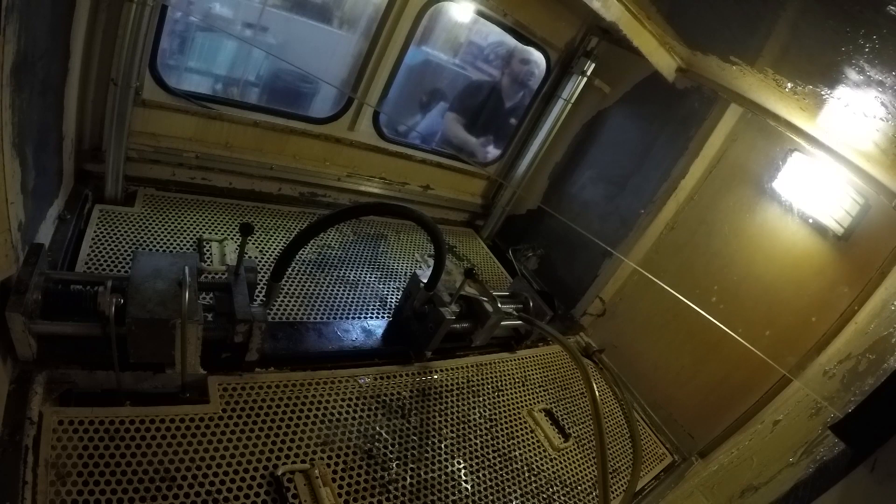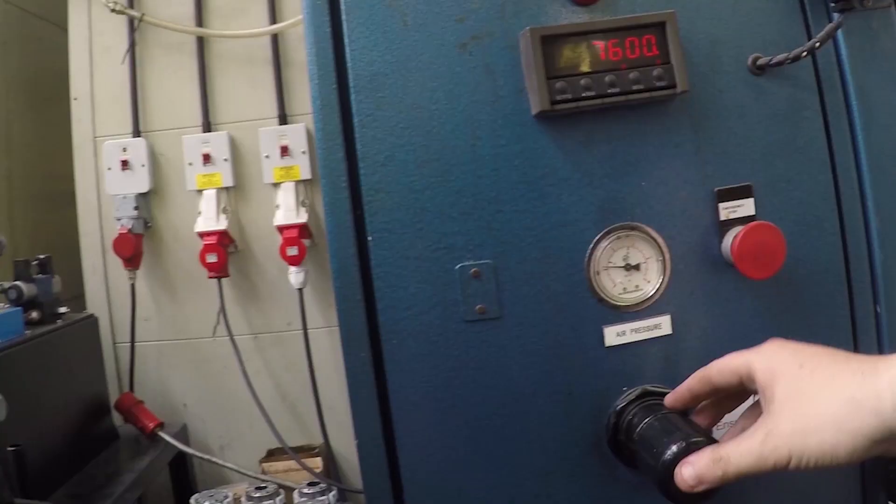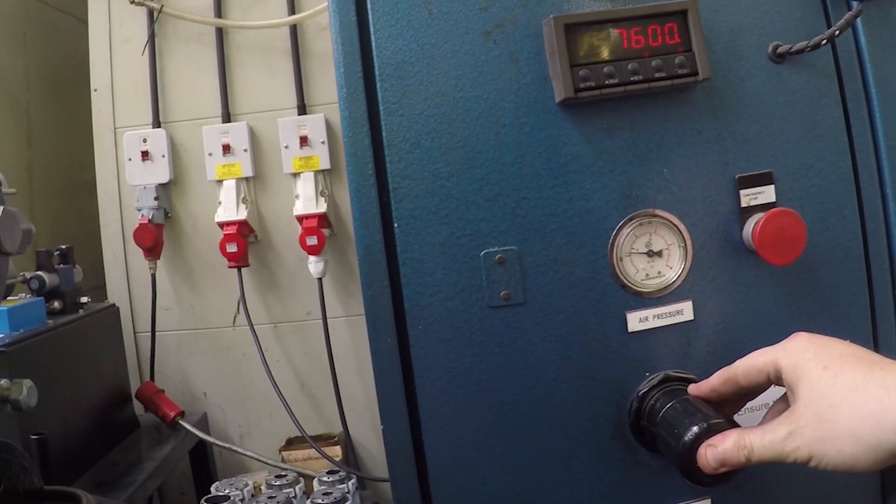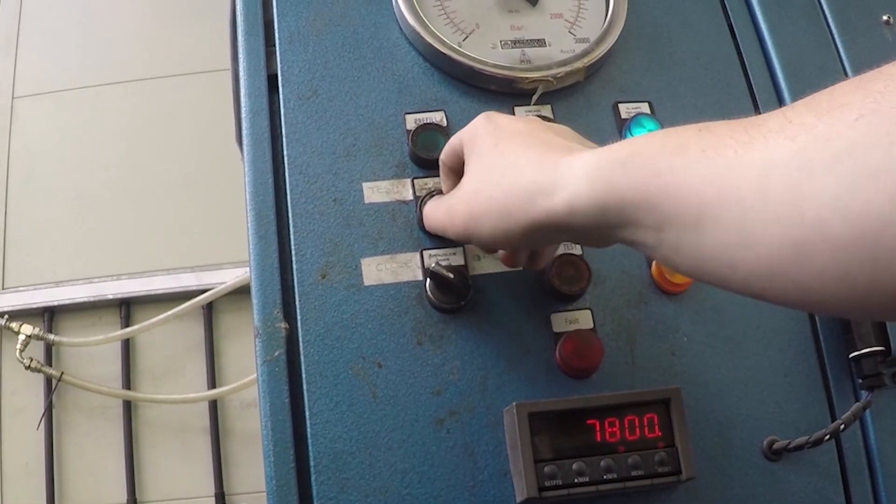When you have reached the desired pressure, push the dial back in again so that it once again clicks. Now set the switch to test and press the start test button. The tester will now run a 90-second test on the hydraulic hose. When it is finished, the hose will automatically blow through to relieve the pressure built up.